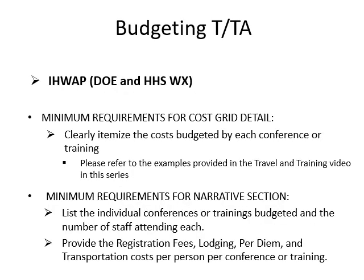For the weatherization grants DOE and HHS, the minimum requirements for the cost grid detail of the TNTA budget line item would be that you need to clearly itemize the costs budgeted for each conference or training. Please refer to the examples provided in the travel and training videos also available in this series. The minimum requirements for the narrative section of the TNTA tab are that you need to list the individual conferences or trainings budgeted, the number of staff attending each, and provide registration fees, lodging, per diem, and transportation costs per person for each conference or training.